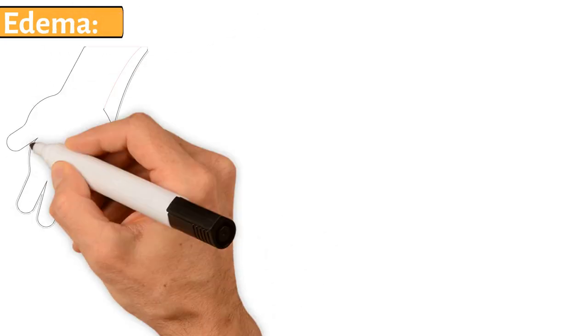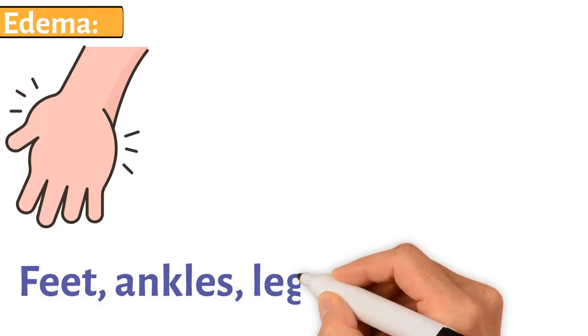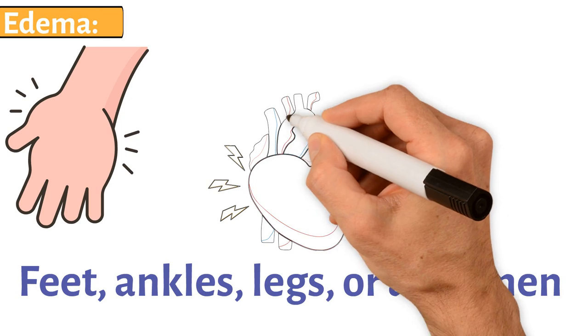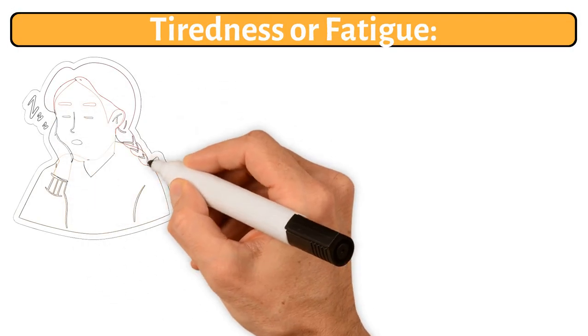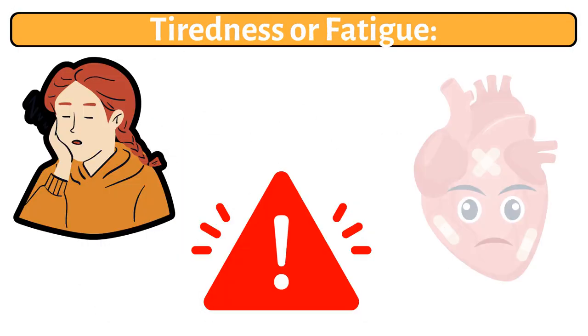3. Edema. Swelling in the feet, ankles, legs, or abdomen can indicate that your heart isn't pumping effectively. 4. Tiredness or fatigue. Feeling unusually tired all the time could be a signal that your heart is struggling.